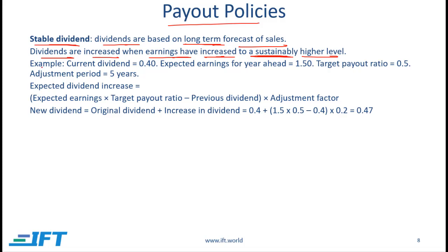Now let's look at an example of the stable dividend policy. Let's say that our current dividend, or the dividend that was received most recently, was 0.4. This is the dividend for the previous year. The expected earnings for the year ahead are 1.5.